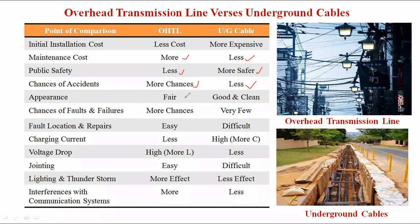Regarding appearance: in overhead transmission lines, it is not good; for underground cable, appearance is good and clean — jointing is not visible to the naked eye. Chances of faults and failures: more in overhead transmission lines, very low in underground cables.